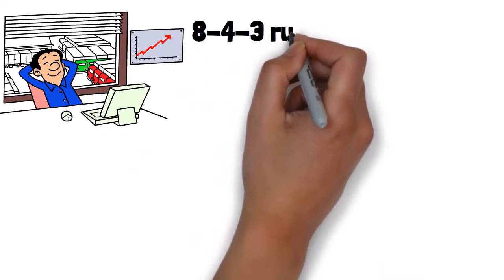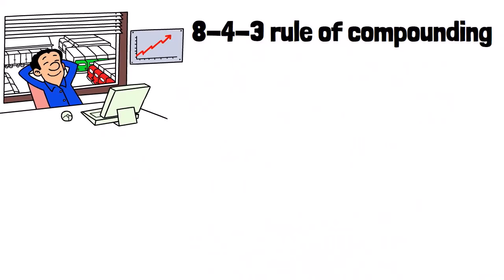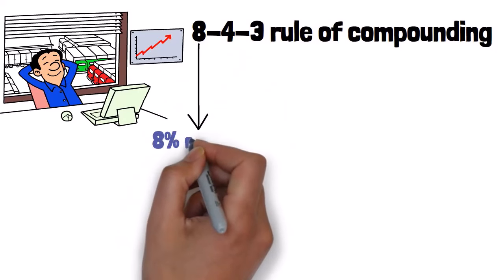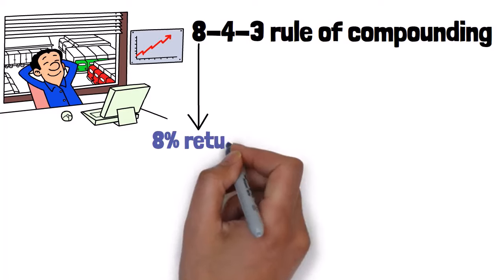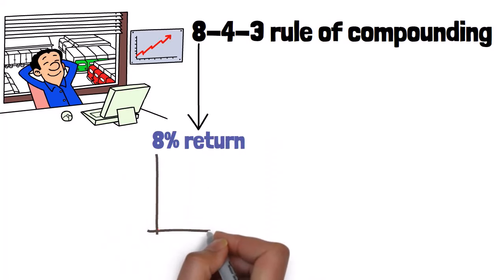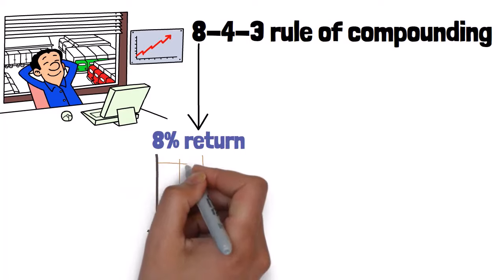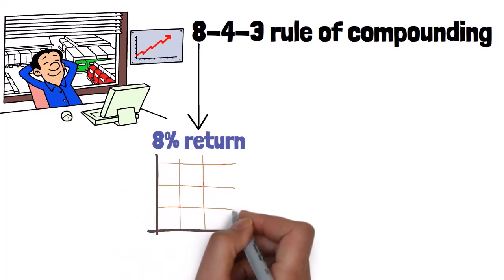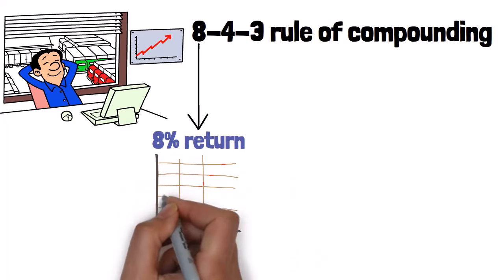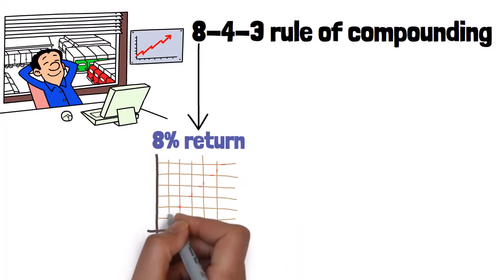Now let's break down the 843 rule of compounding. The 8 stands for aiming for an 8% return on your investment, totally doable for many people. This 8% takes into account both the increase in your investment's value and any dividends it might earn along the way. It's steady income while your investment grows gradually over time.